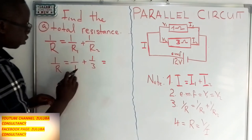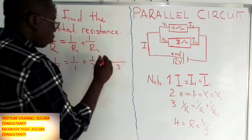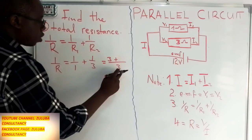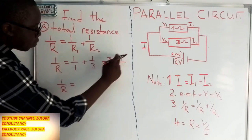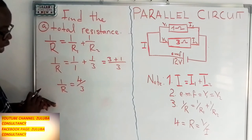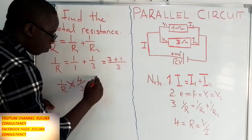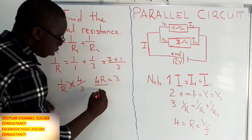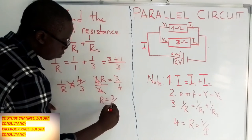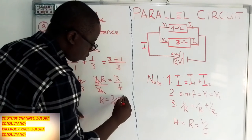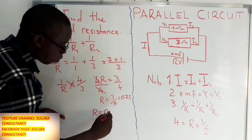Finding the common denominator of 3: we get 3 over 3 plus 1 over 3, giving us 1 over R equals 4 over 3. Cross-multiplying gives 4R equals 3. Dividing both sides by 4, R equals 3 over 4, which is 0.75 ohms. So the total resistance is 0.75 ohms.